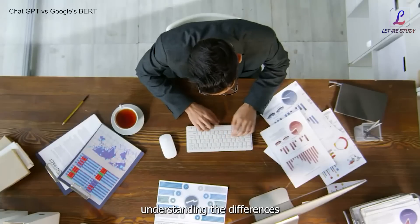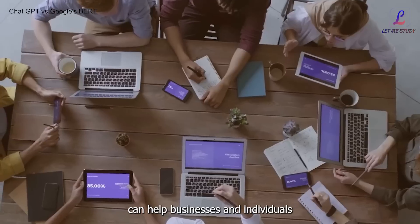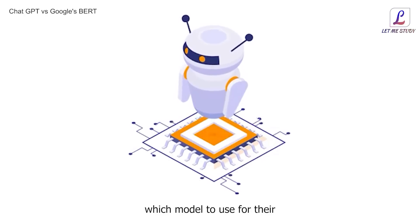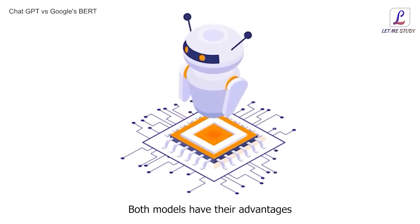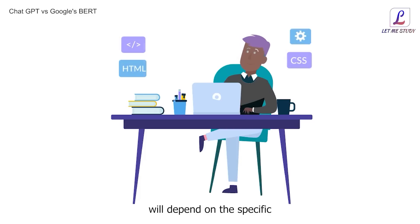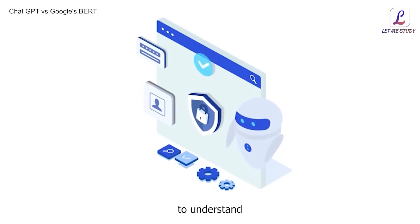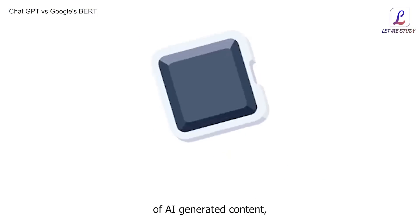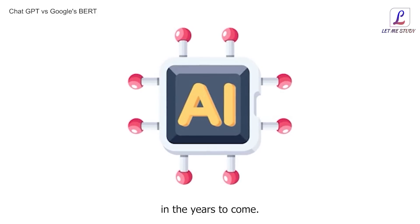In conclusion, understanding the differences between ChatGPT and Google's BERT can help businesses and individuals make an informed choice when deciding which model to use for their AI-generated content. Both models have their advantages and disadvantages, and ultimately the choice will depend on the specific needs of the user. Nevertheless, it's important to understand that we are still in the early stages of AI-generated content and the capabilities of these models will continue to evolve in the years to come.